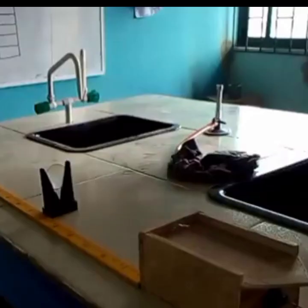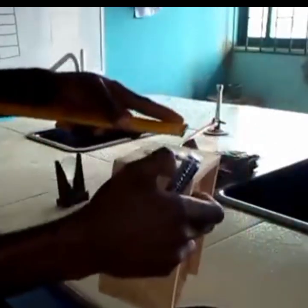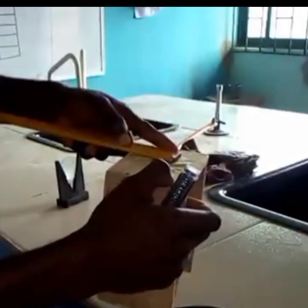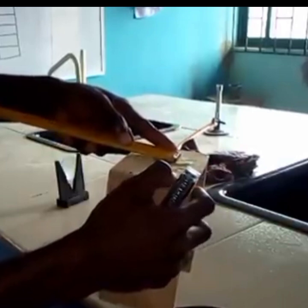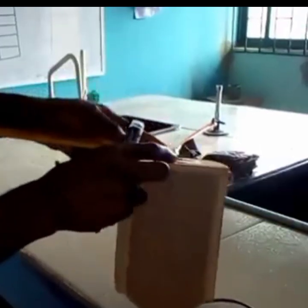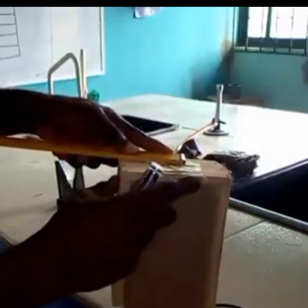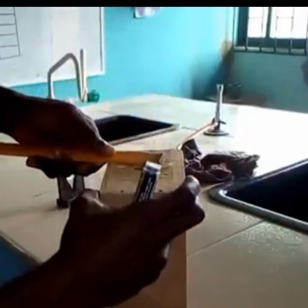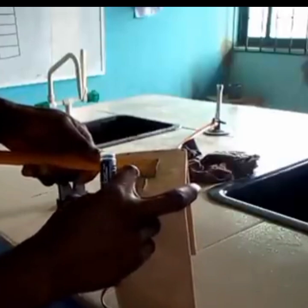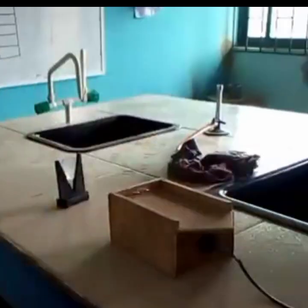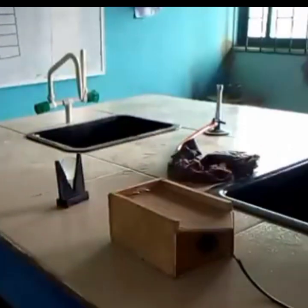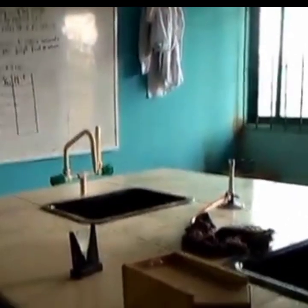We are going to set the distance between the object and the lens, from here to here. The first setting should be 30 centimeters. First let's take the measurements of the object. Taking the measurement, this is giving me about 3 centimeters. So my a₀ is going to be recorded as 3.0 centimeters.